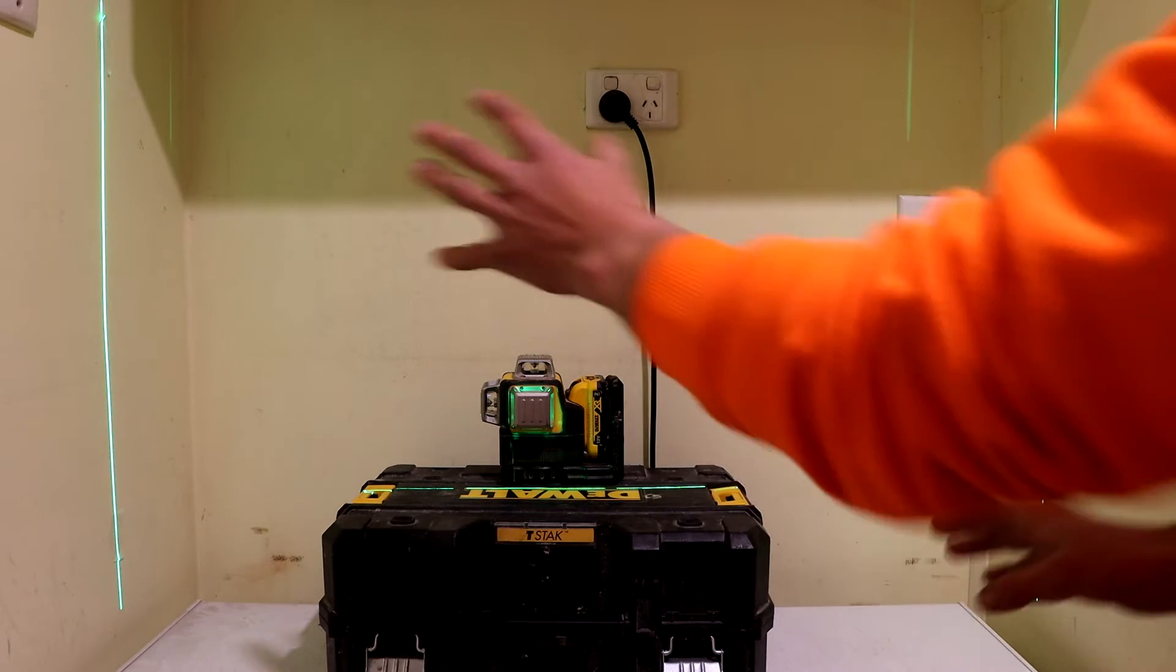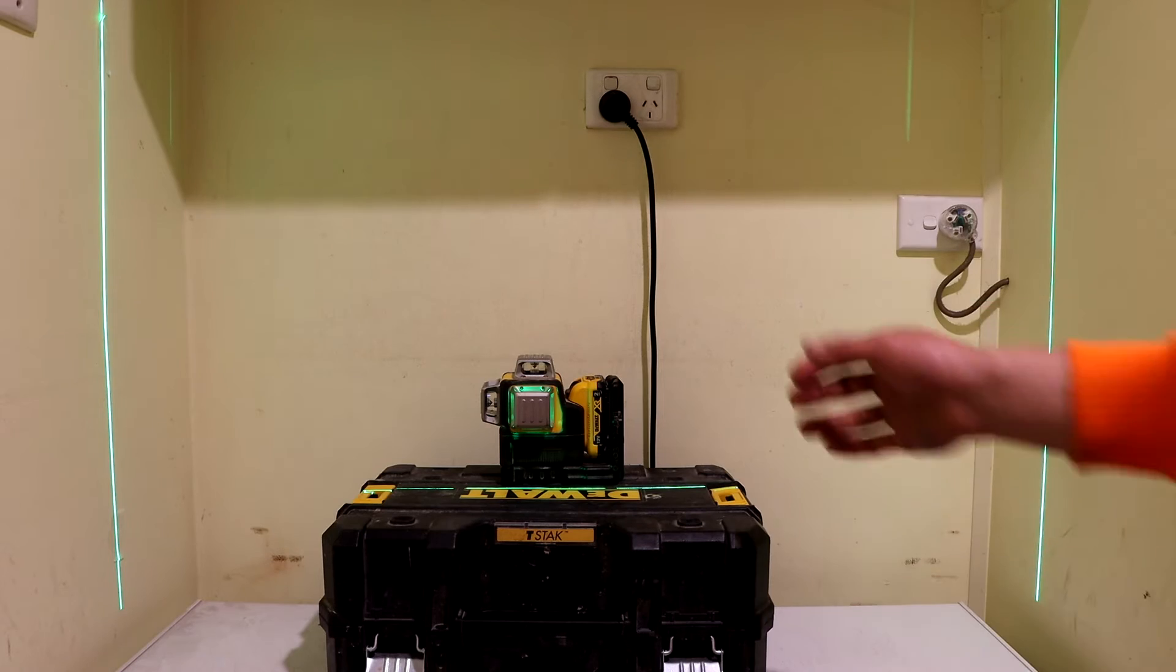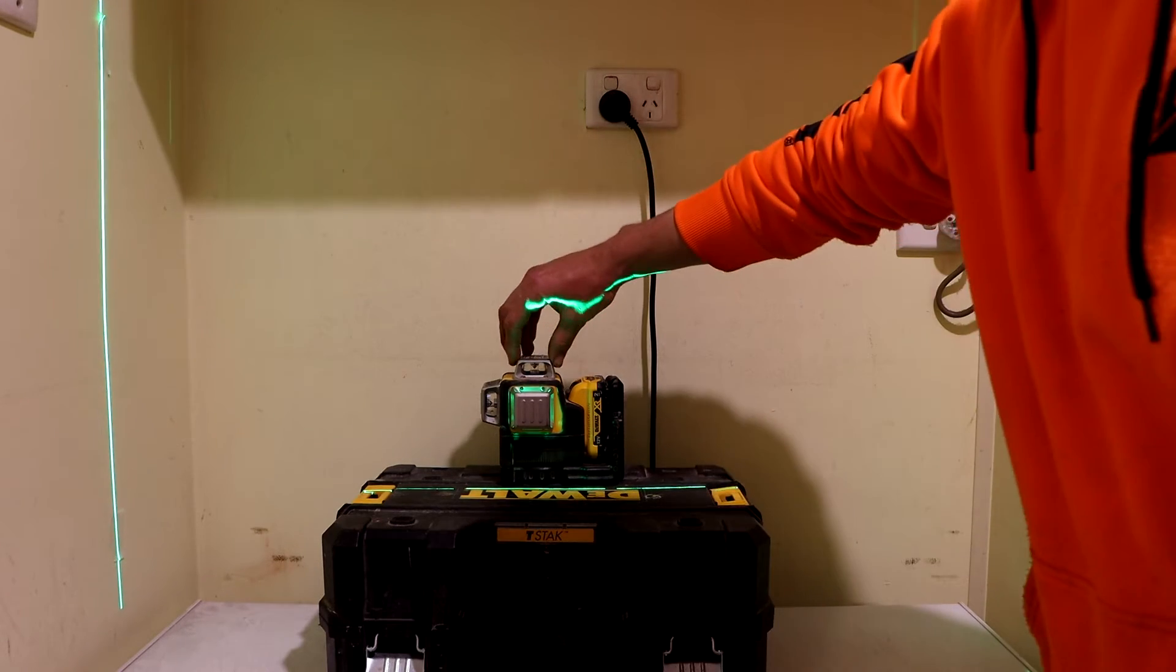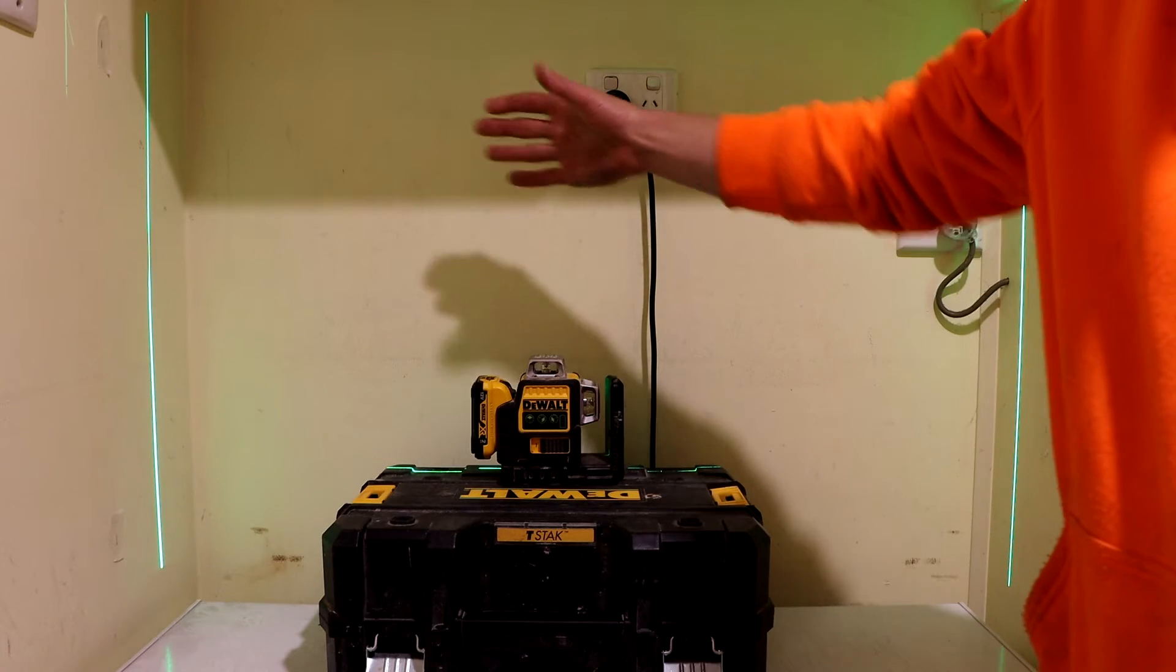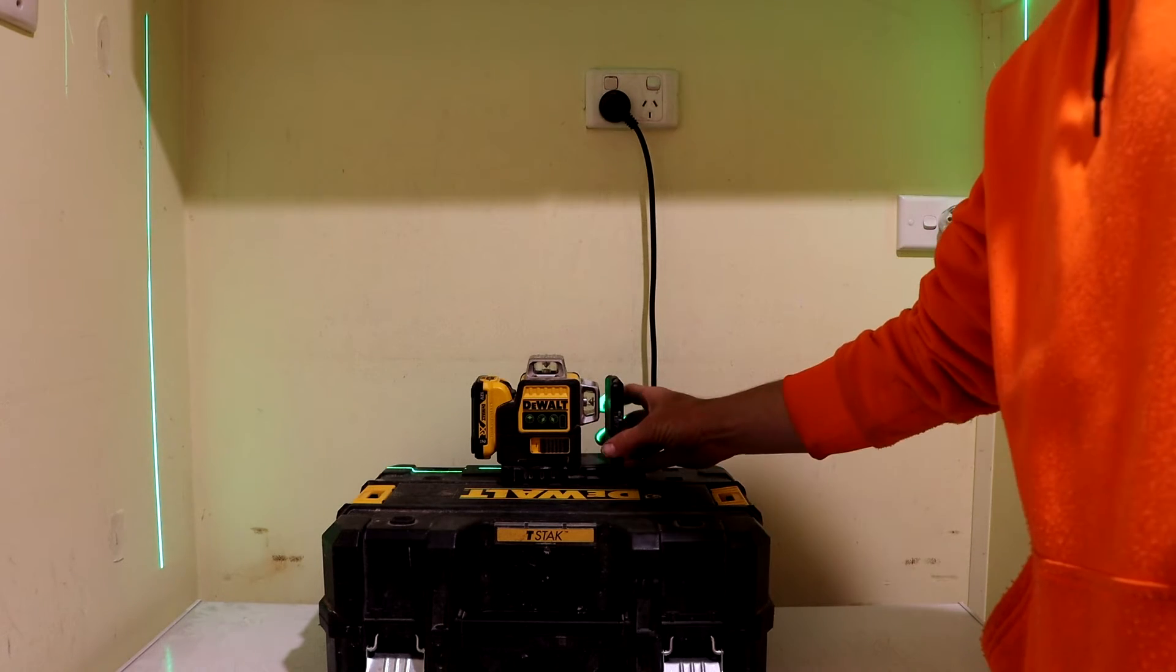Now our laser is hitting all four of those marks, and what we can do is spin our laser around. Obviously, that's going to hit a different point of the wall now because it's shooting from the other side of the laser level.